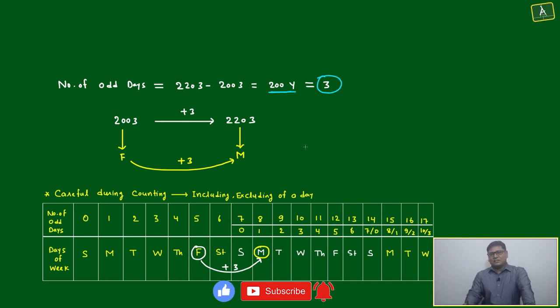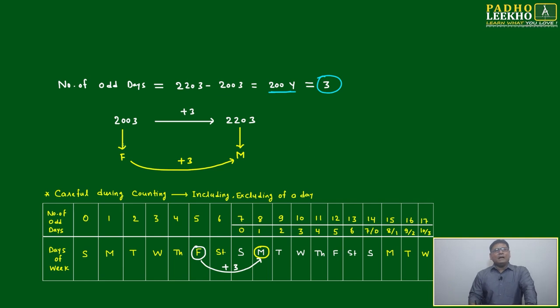Because we know in 200 years, number of odd days will be three. In 200 years, number of odd days will be three.